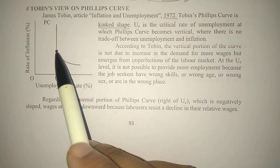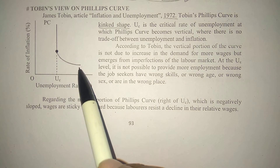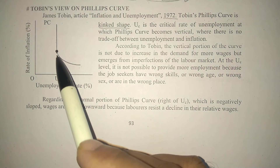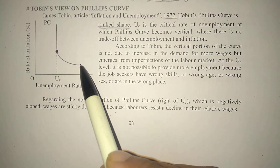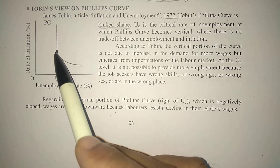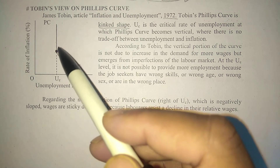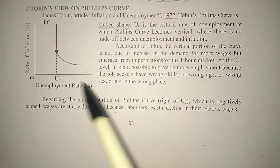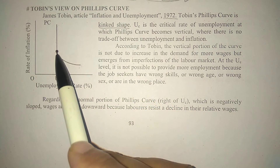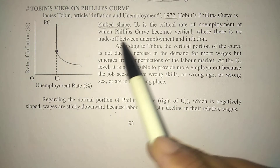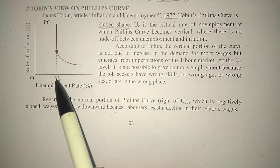There is a kink (mode) in the curve. One part is vertical, and another part is like this — if you start from here, it has a negative slope, and then it becomes vertical. So this kink exists at a specific point on the curve.